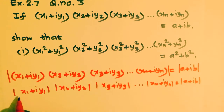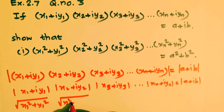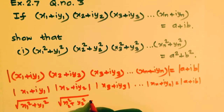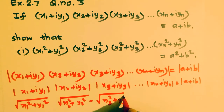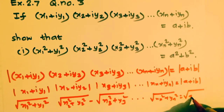Writing out the moduli: square root of (x1² + y1²) into square root of (x2² + y2²) into square root of (x3² + y3²) and so on, square root of (xn² + yn²) is equal to square root of (a² + b²).